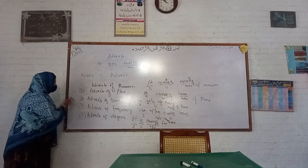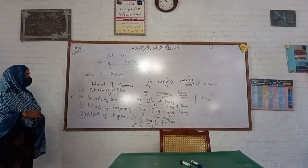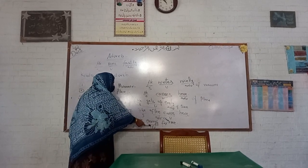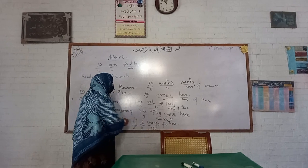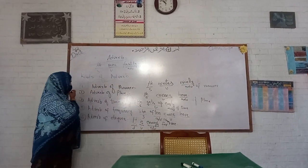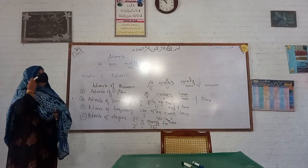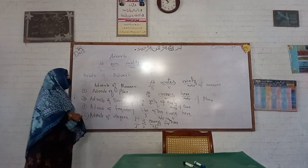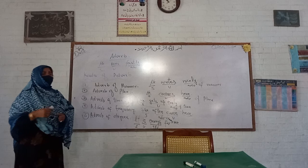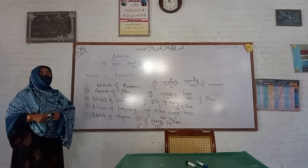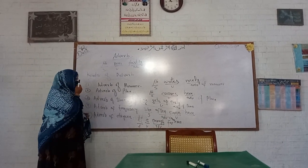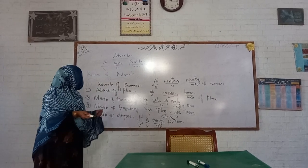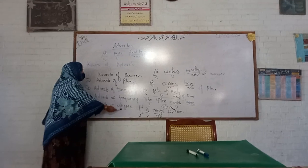What about adverb of degree? For example, 'It is enough for me' — 'it' is the subject, and 'enough' performs the role of adverb of degree. Another example: 'He faces the difficulties strongly.' Over there, 'strongly' is the adverb of degree.